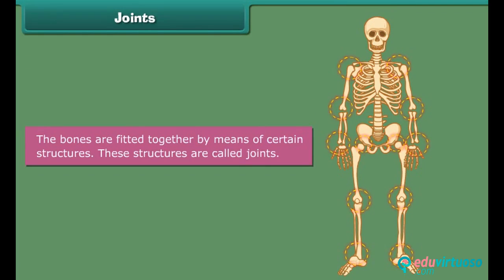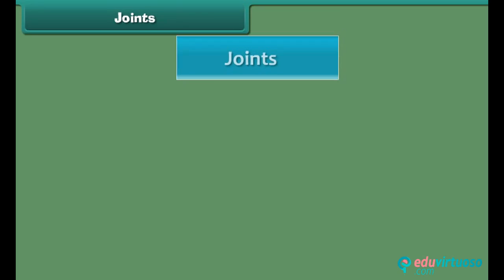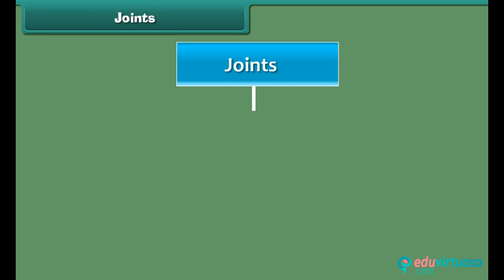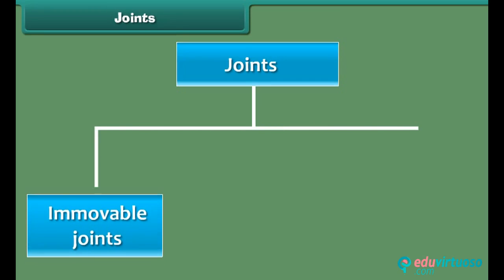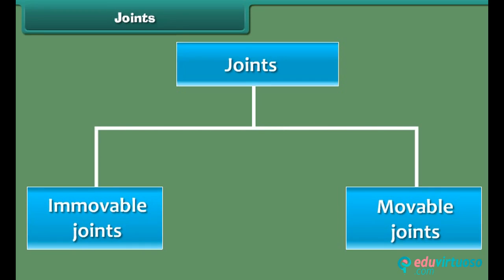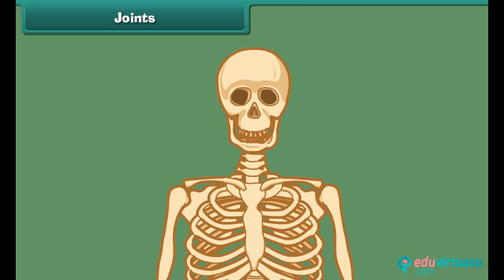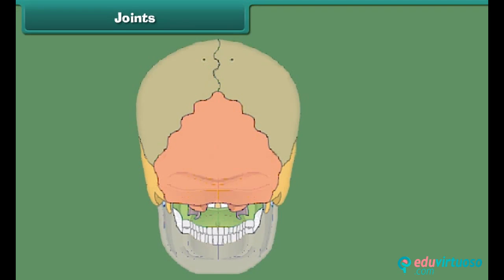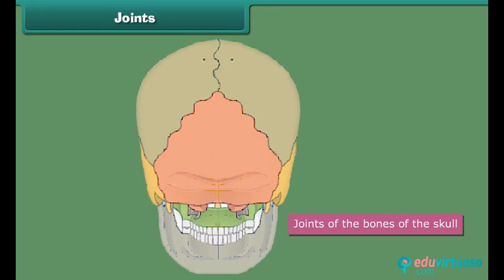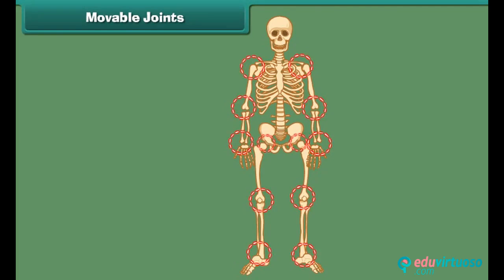The bones are fitted together by means of certain structures called joints. Joints facilitate body movements and are of two main types: immovable joints and movable joints. Immovable joints are joints where no movement of the bones is possible. The joints of the bones of the skull are examples of immovable joints.